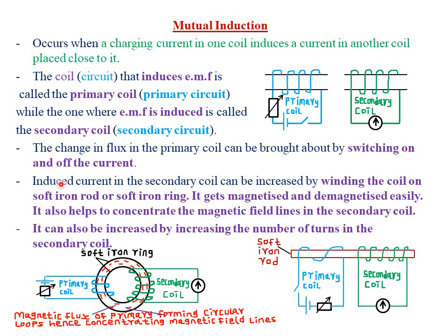The induced current in the secondary coil can be increased by winding the coil on a soft iron rod or on a soft iron ring. For example, you can see here we have the primary coil wound on a soft iron ring, and the secondary coil is also wound on a soft iron ring. Similarly, we also have the primary coil being wound on a soft iron rod, and the secondary coil being wound on that same soft iron rod.